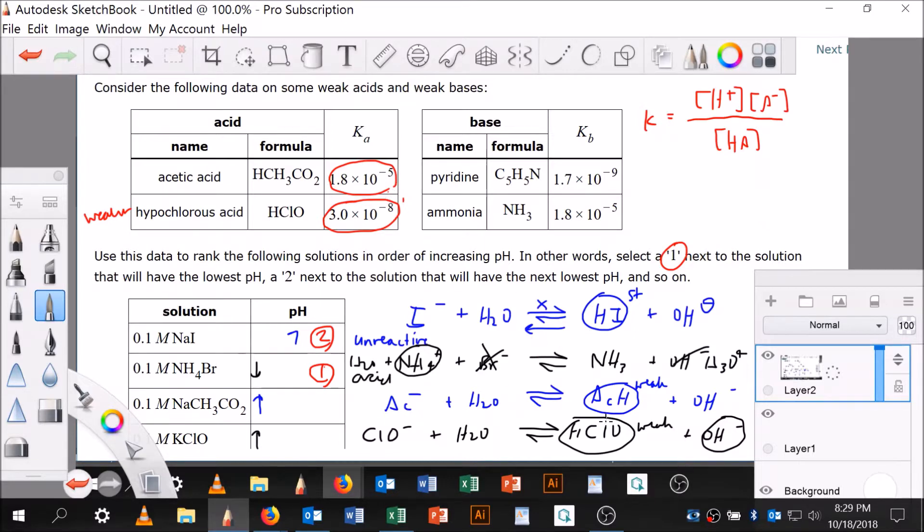So if that's the weaker, that means it's going to go this way more. It's going to produce more hydroxides, so this then is going to be number four—that's going to be the highest pH—and this will be three. Okay, so it goes two, one, three, four. Let's go back over here to the explanation.